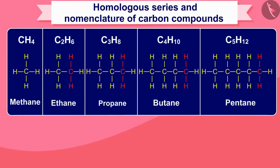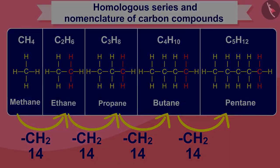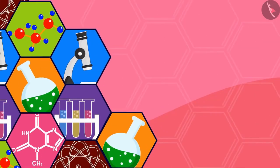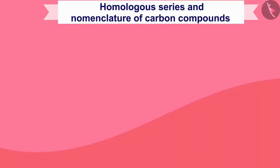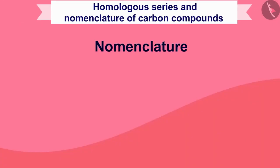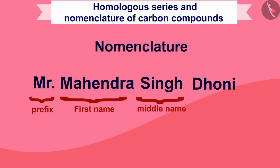The chemical properties ensured by a functional group remain the same throughout the homologous series. Let us now study the method of naming carbon compounds. Before understanding the nomenclature of carbon compounds, we will see an example of a name like Mr. Mahendra Singh Dhoni. In this name, 'Mr.' can be called a prefix, 'Mahendra' is the first name, 'Singh' is the middle name, and 'Dhoni' is the surname.